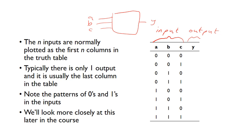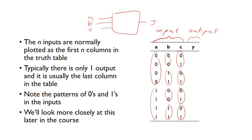When we look at the truth table, you can see there's a pattern in the 0s and 1s in the inputs. In the C column we've got alternating 0, 1, 0, 1, 0, 1, 0, 1. Then in B we've got two 0s, two 1s, two 0s, two 1s. Then in A we've got four 0s and four 1s. We'll look later in the course where this comes from, because this pattern makes it very quick and easy when you draw out a truth table.